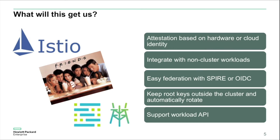You also get easy federation from the Istio Spire instance to outside Spire instances or other OIDC federation — for example, to access cloud APIs natively. Another security feature is that Spire allows you to keep your root keys outside the cluster and automatically rotate them frequently, which is more secure. Istio by default generates the root keys locally, keeps them inside the cluster, and really never rotates them. And finally, workloads can access the workload API directly, which means they can get other certificates, trust bundles, JWTs, and other things the workload API could provide in the future.